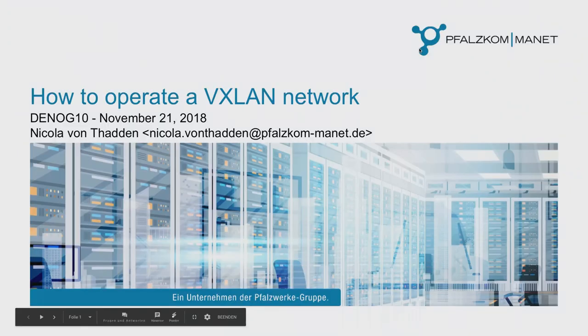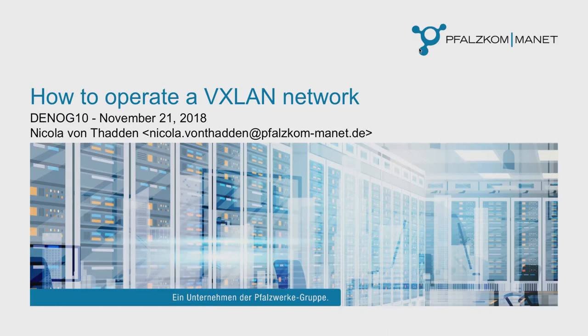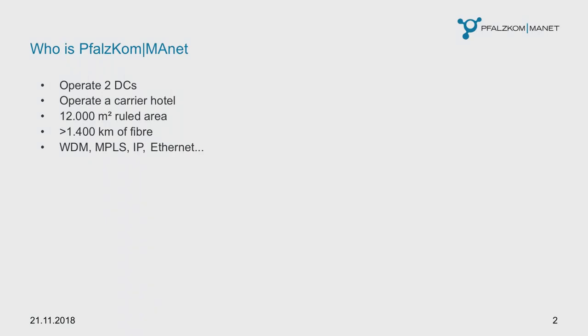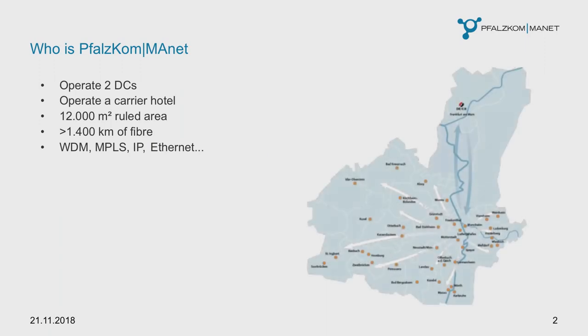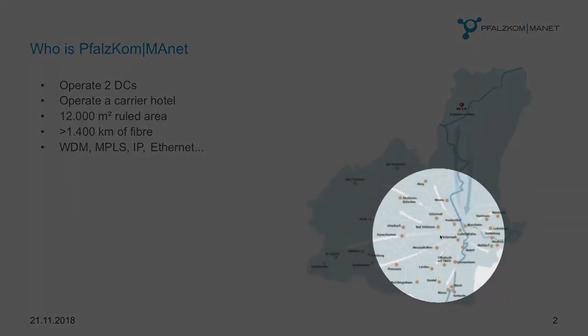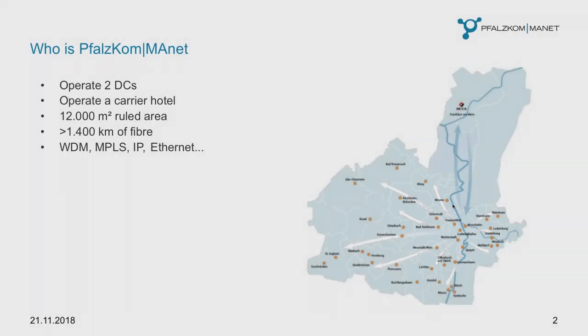My name is Nikola von Tadden, also known as Nikodak in the IRC channel. As Florian has introduced me, I will give you a rather short overview on how to operate a VXLAN network. We operate one VXLAN network. When I say we, I mean FASCOM-MANET. We are a small ISP in this area. We have two data centers, a carrier hotel in Mannheim, around 12,000 square meters of route area, and 1,500 kilometers of fiber. We are mainly in the southwestern part of Rhineland-Palatinate, not far from here, but we obviously have connectivity to Frankfurt.